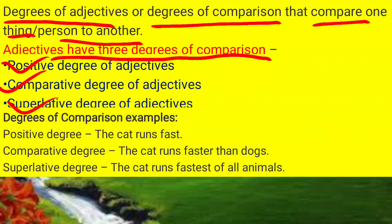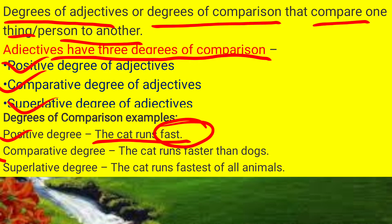Let's look at examples of the three degrees. Positive degree: 'The cat runs fast' — here 'fast' is the positive degree. Comparative degree: 'The cat runs faster' — here 'faster' is the comparative degree because we are making a comparison between the cat and the dog.